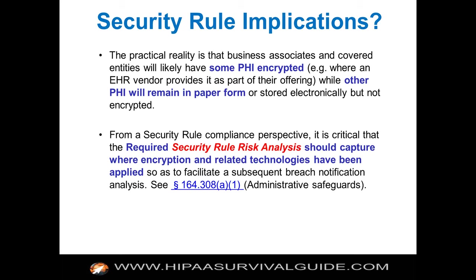At this point you've determined there has been an impermissible use or disclosure of unsecured PHI, so you move to the second step of the analytical framework: the exceptions. There are three. Was it disclosed to the patient? The patient can have access to their own PHI — no breach. Was there a valid authorization? No breach. Was it disclosed to a legal representative? You have to walk through the general rule at 164.502 to determine this.